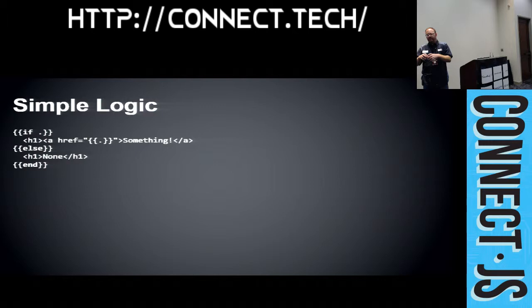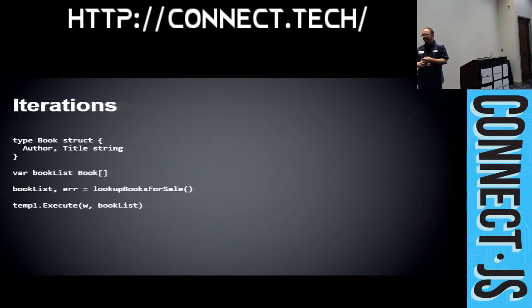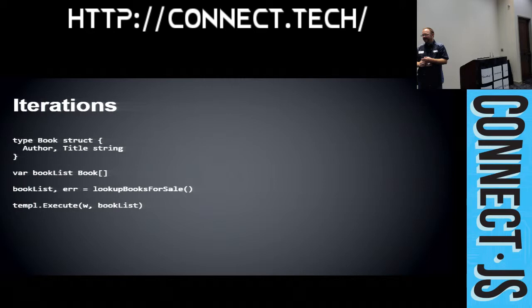You have a Go variable that's a slice of books. The square brackets denote a slice, not an array — a slice has references to the current size of the array and does a lot of magical things for you. In this example, it creates a variable that's a slice of books, assigns it from a function called 'lookup books for sale,' then executes the template. The template has a range operator that automatically iterates over items in the list, and if it's empty, the else clause fires automatically — there's no need to check if the count is zero.